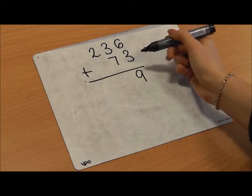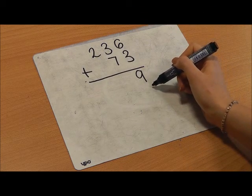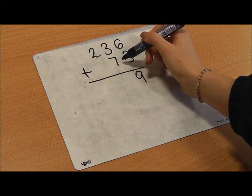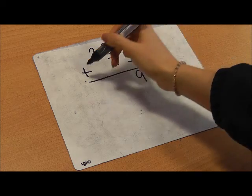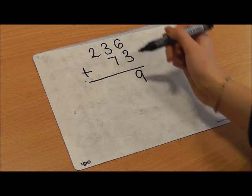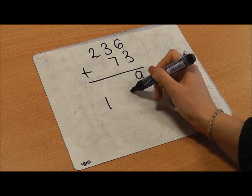I'm going to move on to my next column, making sure I leave a line. 3 add 7, or 3 10s add 7 10s, or 30 add 70 equals 100.